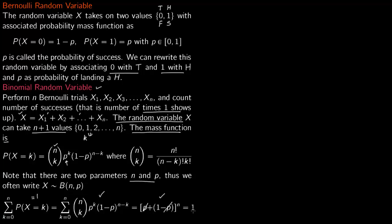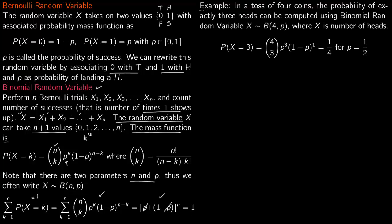Let us do two examples. Example one: in a toss of four coins, find the probability of exactly three heads using the binomial random variable. Here n equals 4 and p equals 1/2, and we want k equals 3. So we compute 4 choose 3 times (1/2)^3 times (1/2)^1, which gives 4 times (1/8) times (1/2) equals 1/4. The probability of exactly three heads in a toss of four coins is 1/4.